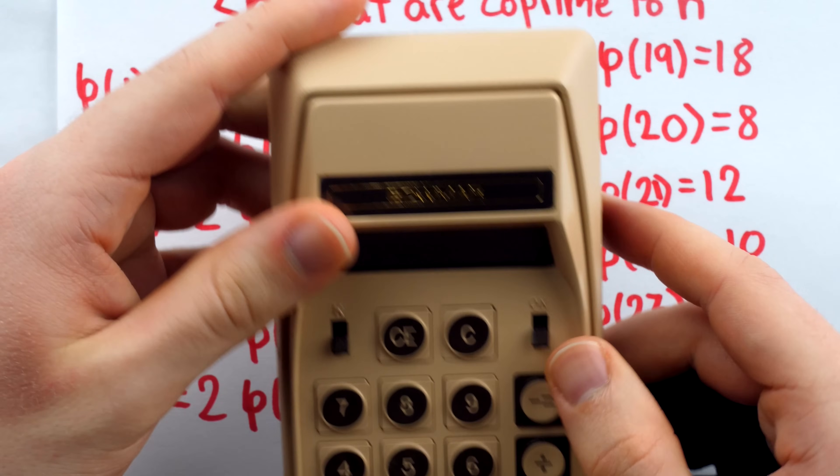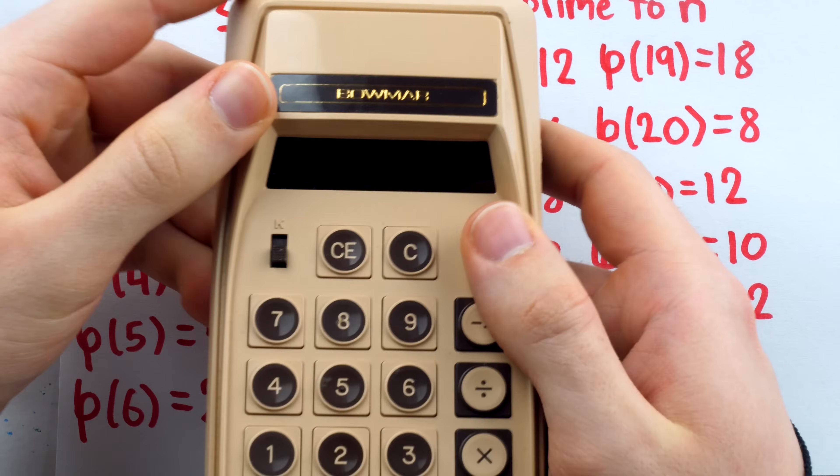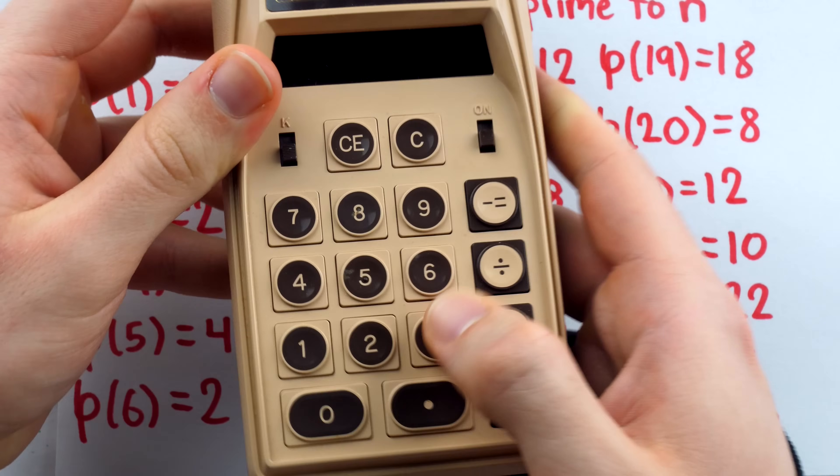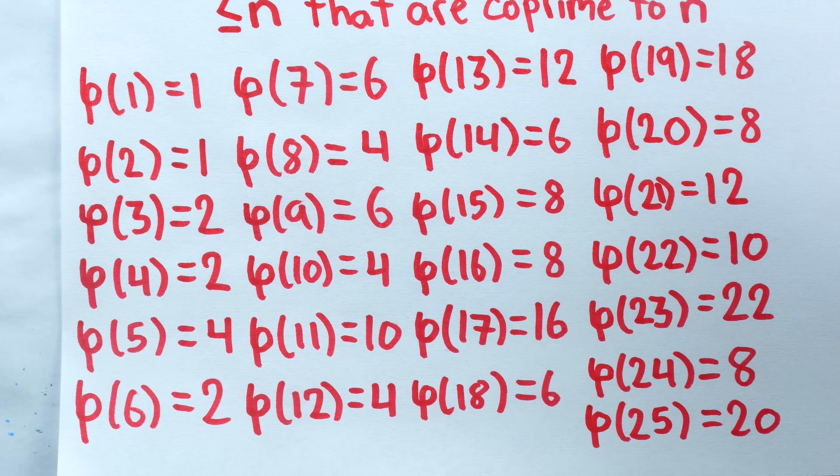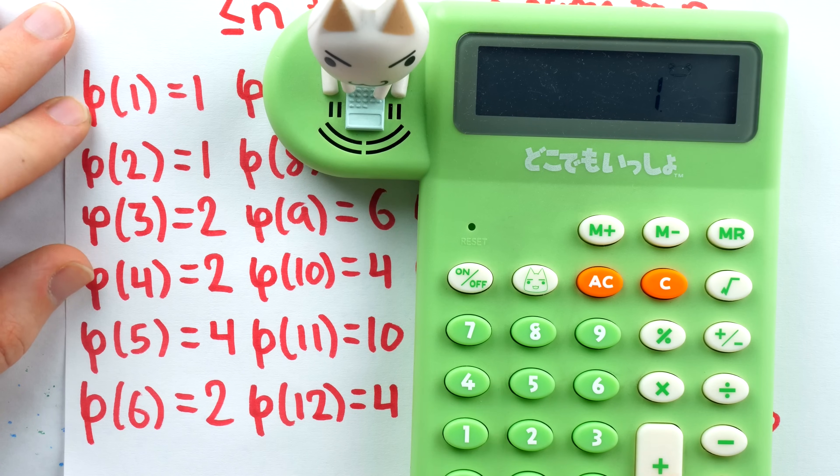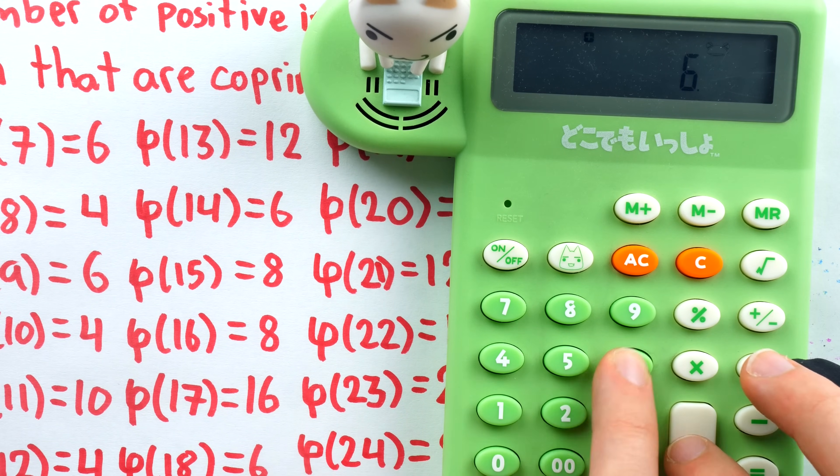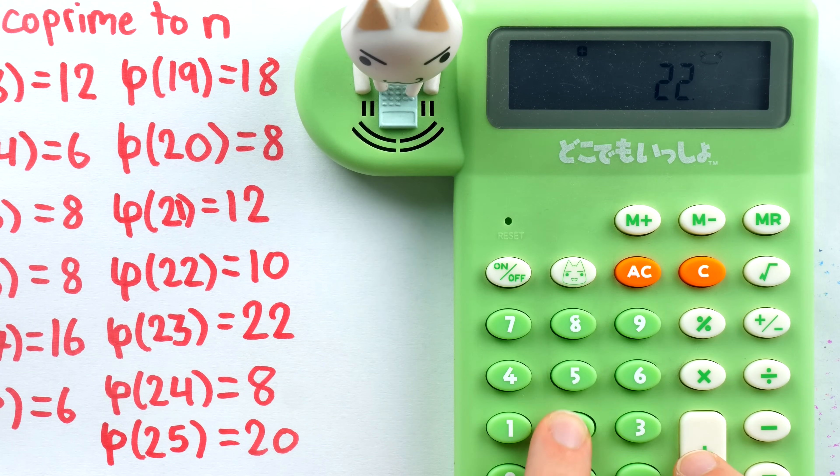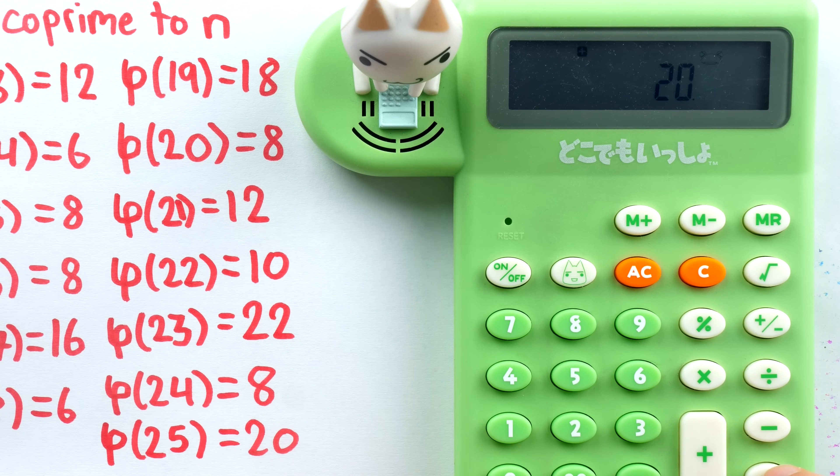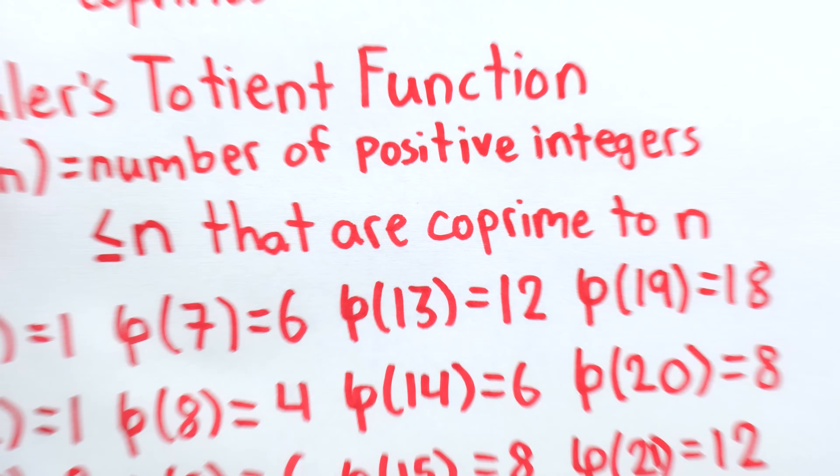But what happens if we add up all of these first 25 values of the totient function? Ah, drats, my Bomar is dead. I guess I have to go recharge it. Well, back to old faithful. So I'm just going to add all 25 of these totient values up and we'll see what we get. Wow, look at that. It's 200. So, fun fact in summary, adding up the first 25 values of Euler's totient function produces 200.